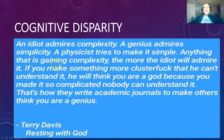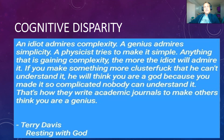Anything that is gaining complexity, the more the idiot will admire it. If you make something more of a clusterfuck that nobody can understand, they will think you are a genius because you made it so complicated. That is exactly what's happening. If you ever tried to publish a simple solution to a problem, the peer review system would simply never accept it. The only things that get published are things which are even more strangely complex and make even less sense than the previous explanations. That's how they write academic journals. It seems uncorrectable — we're just going to have to survive on our own.